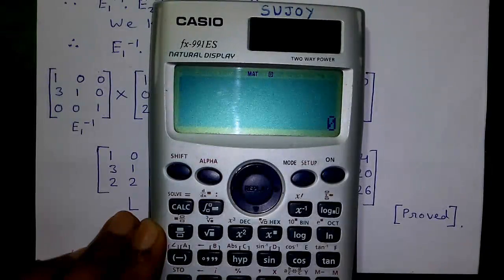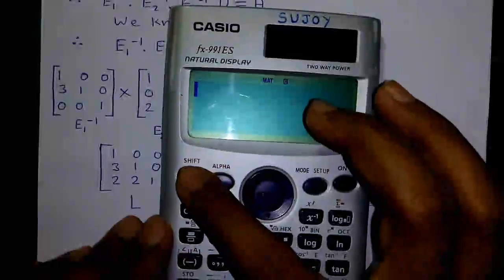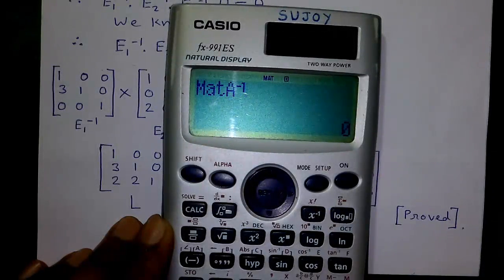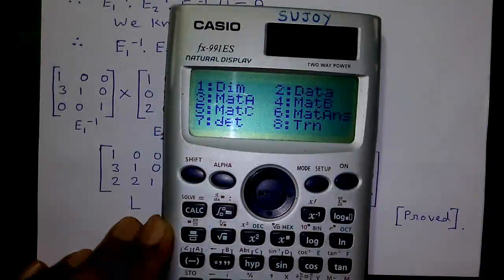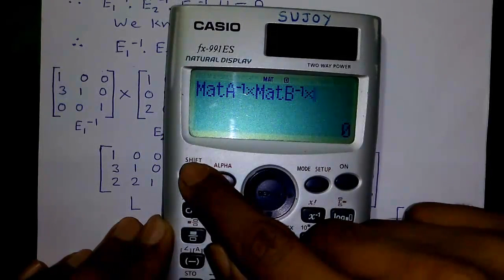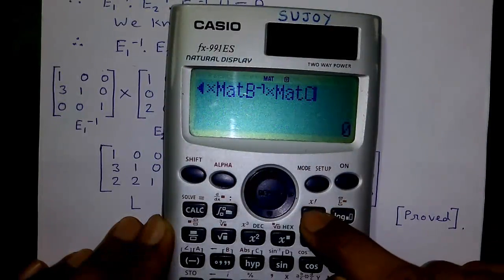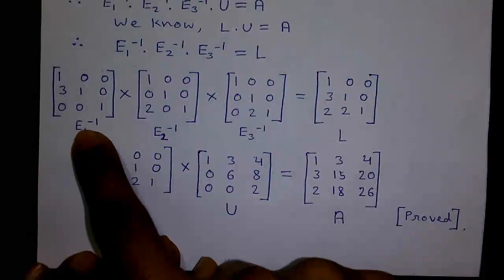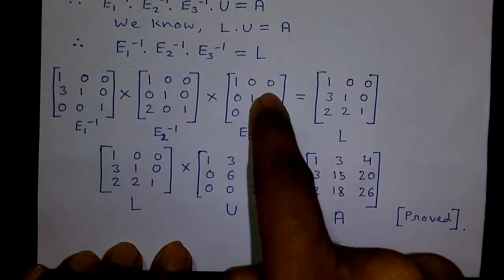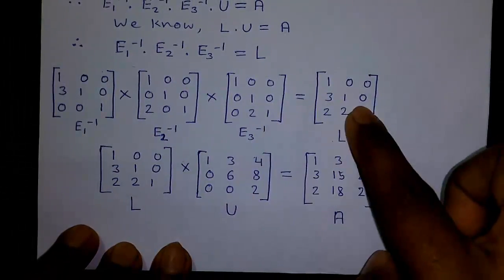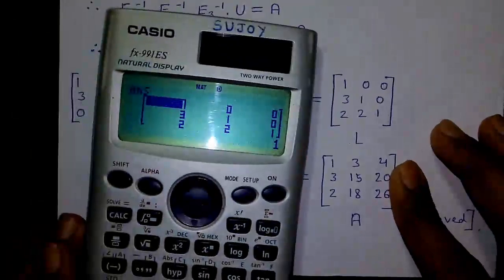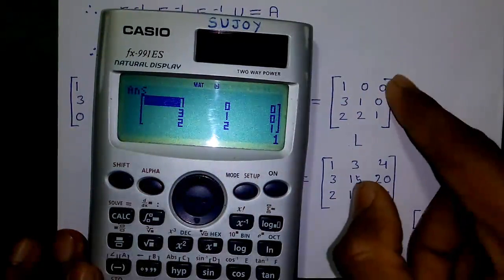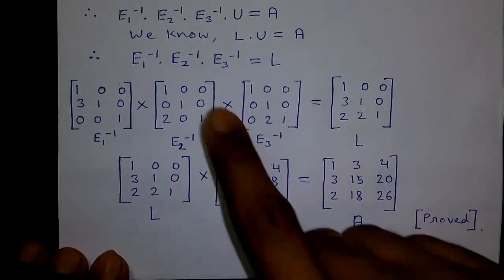To find matrix A's inverse, press Shift 4, 3 for matrix A, then the inverse button, and press equals. E1⁻¹ is: 1, 0, 0; 3, 1, 0; 0, 0, 1. Rather than finding each inverse individually, you can multiply them directly: press Shift 4, 3 (matrix A), inverse, × Shift 4, 4 (matrix B), inverse, × Shift 4, 5 (matrix C), inverse, then press equals. This directly computes A⁻¹·B⁻¹·C⁻¹ = L. The result is: 1, 0, 0; 3, 1, 0; 2, 2, 1 — our required L.